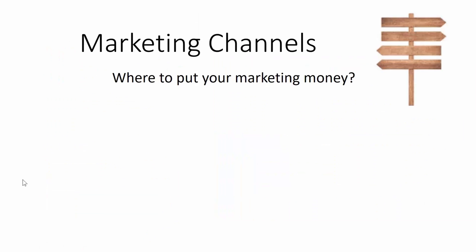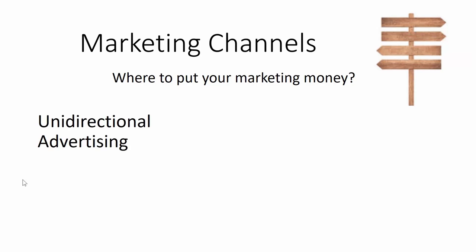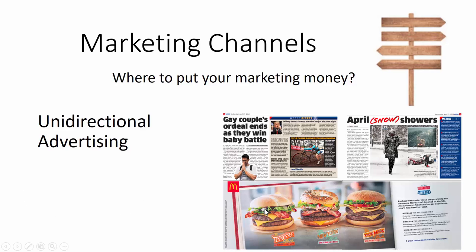Now let's recap again. We have our marketing channels and we need to decide where to put our marketing money. In the first place, we have unidirectional advertising. If you purchase an advertisement space in a newspaper, the ad would be displayed there. The problem is there is no return on investment calculation possible because we never know whether a customer came to purchase from us because he saw the advertisement or not. This is why we don't promote this.